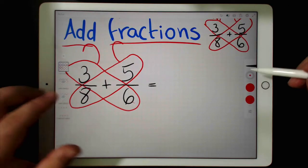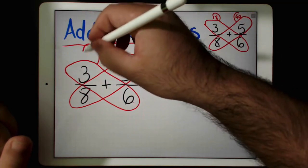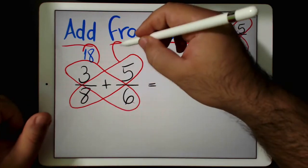So how much is 3 times 6? Well, 3 times 6 is 18 and 5 times 8 is 40.